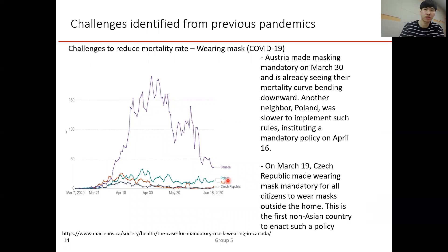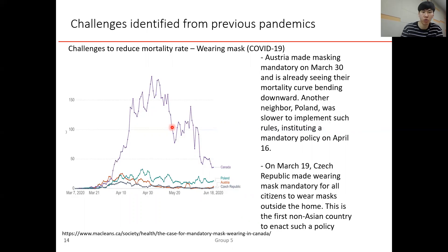Another challenge is wearing masks. Look at the differences between countries: Czech Republic, Austria, Poland, and Canada adopted mandatory mask-wearing policies at different speeds. The Czech Republic was the fastest and Canada the latest. In Canada, many people did not wear masks or wore non-medical or homemade masks. These differences contributed to differences in mortality rates.